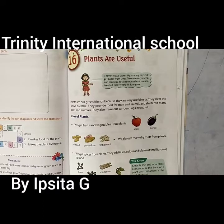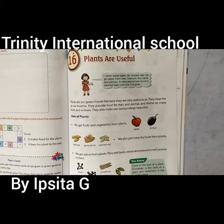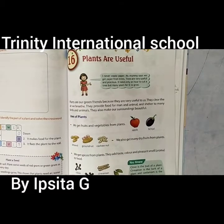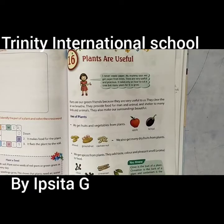In our previous chapter, we have already discussed about the different parts of plant, about the different types of plants, and we have also seen the different usefulness of plant. Among the usefulness, we have learned only about how the plants make their own food. Now, in this chapter, we will learn about the various types of uses of plant.